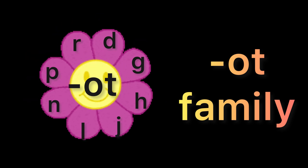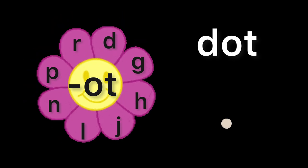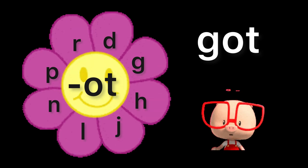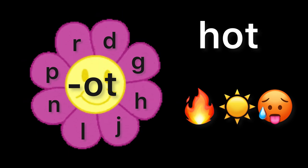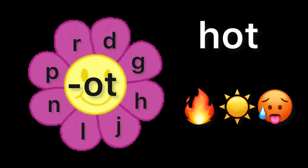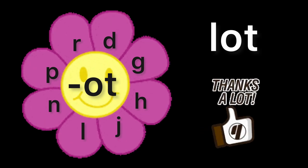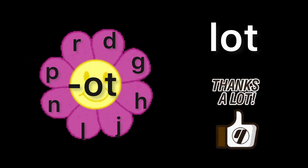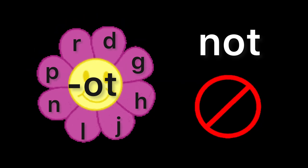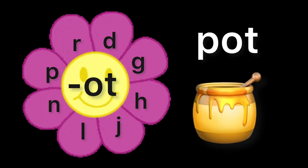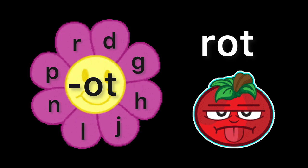Now let's start with the Ot Family. D-O-T: Dot. G-O-T: Got. H-O-T: Hot. J-O-T: Jot. L-O-T: Lot. N-O-T: Not. P-O-T: Pot. R-O-T: Rot.